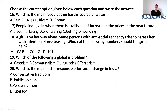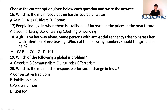Now, Choose the Correct Option — MCQs. Q16: What is the main source of water on Earth? The answer is rain. Q17: People indulged in which activity where there is a likelihood of increase in prices in the near future? The answer is hoarding.